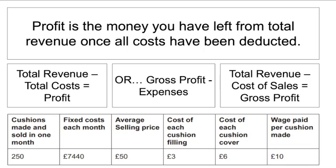Now we've got our revenue and our costs, we can calculate our profit — the money left over from revenue once all costs have been deducted. The simple formula is total revenue minus total costs. But in OCR GCSE Business Studies, there are other ways of calculating it. Gross profit is total revenue minus cost of sales, where cost of sales is another way of saying total variable costs. If you then deduct your expenses — another way of saying fixed costs — from gross profit, you get your net profit.